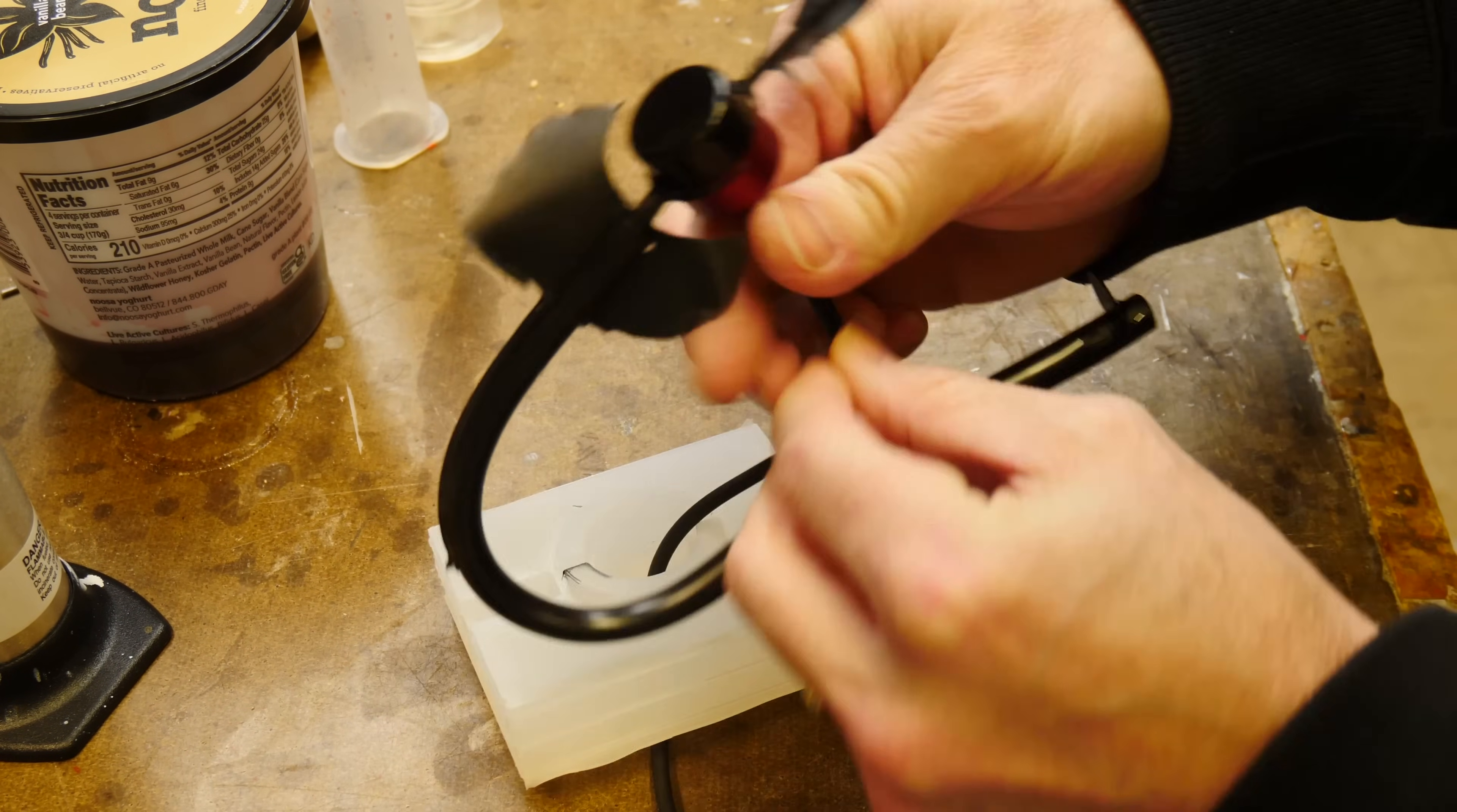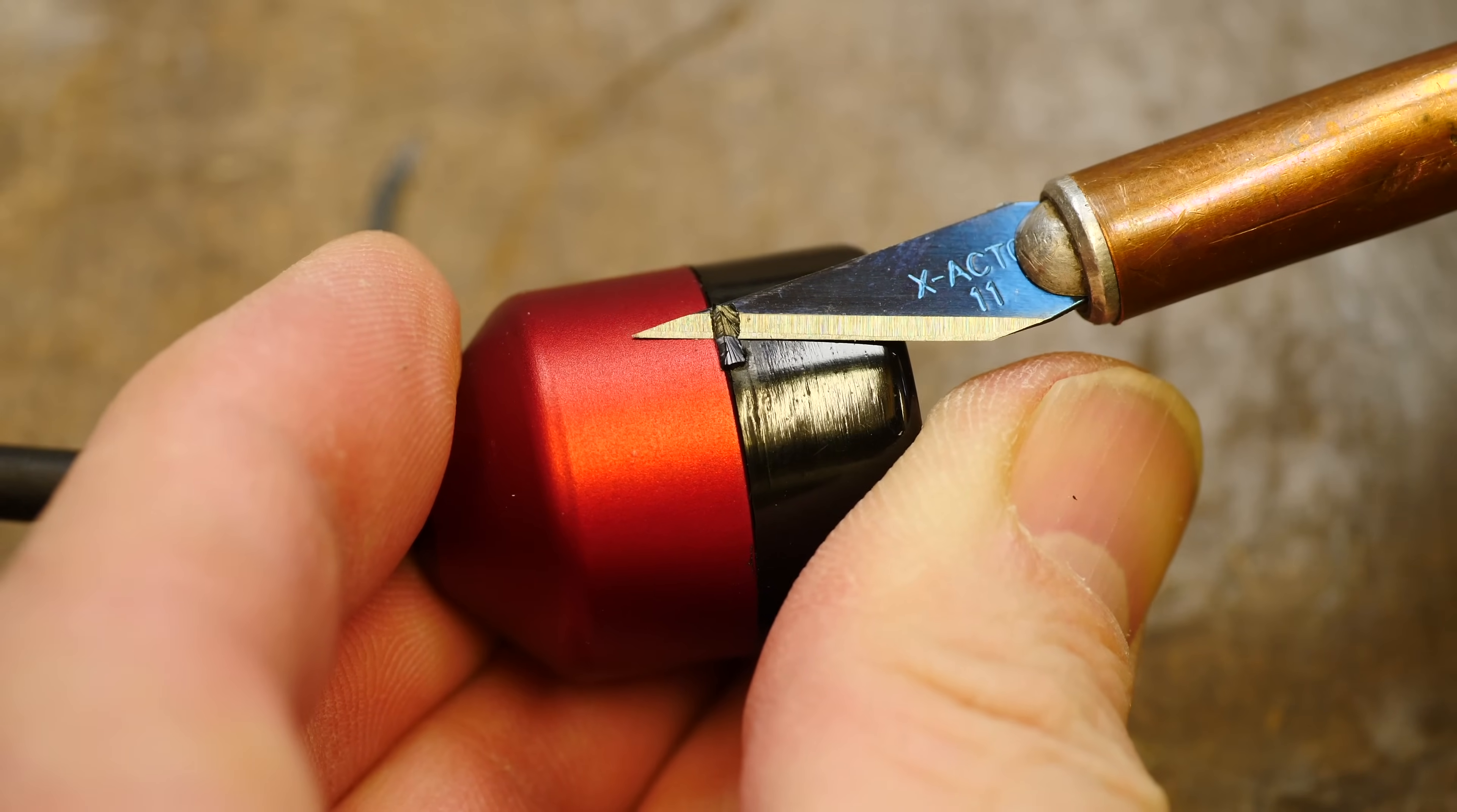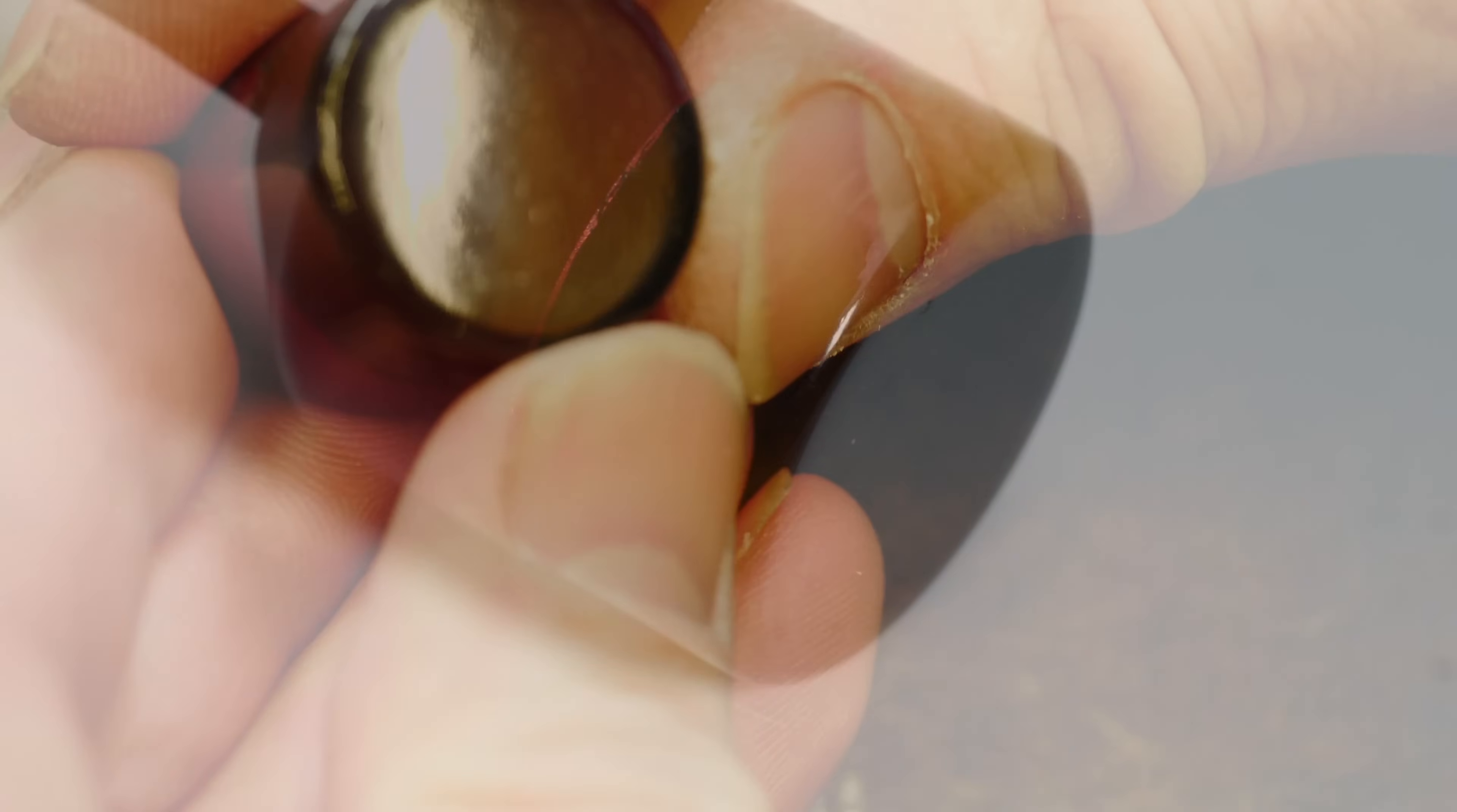Now, I will trim off the excess with some nippers, and then we'll clean up the flash with an X-Acto. Come back and trim it out. So this is what I'm talking about. This is a cosmetic part, so we need to minimize the place where the resin goes in, and the resin comes out so that we have a nice, good-looking cosmetic part.